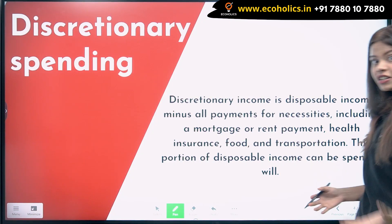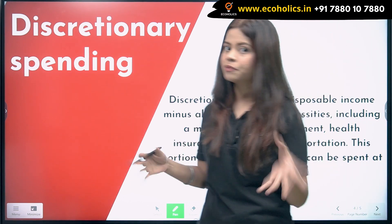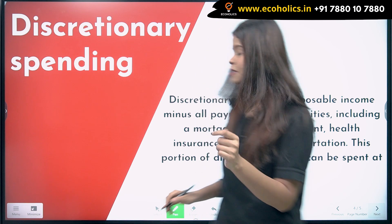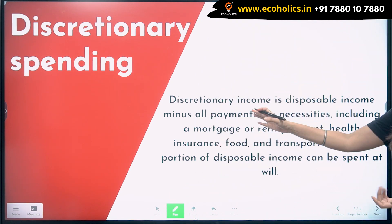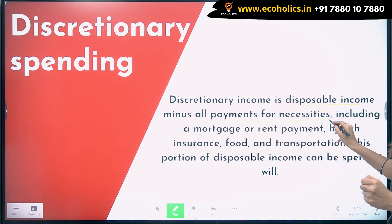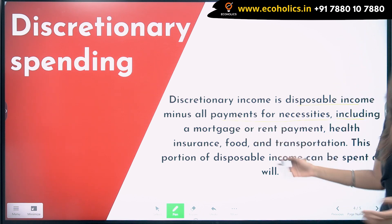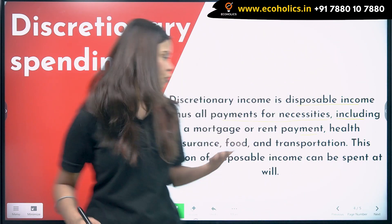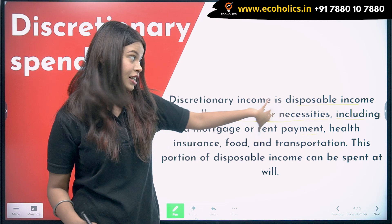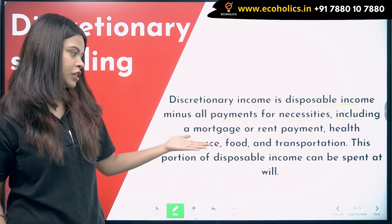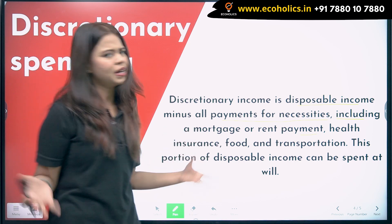Discretionary income is the disposable income minus all the payments for necessities, including a mortgage or rent payment, health insurance, food, and transportation. These all come under your living expenses, and the remaining portion of disposable income can be spent at will.